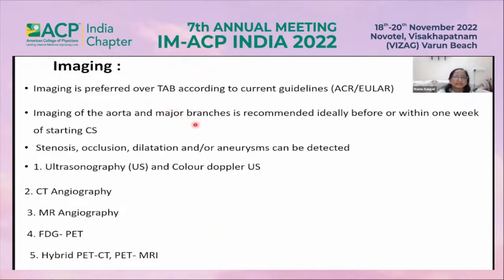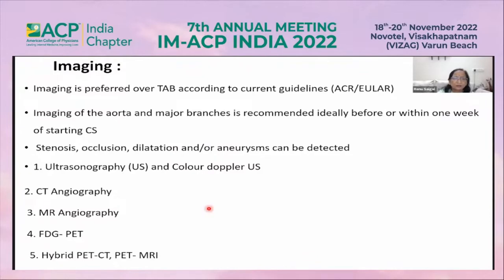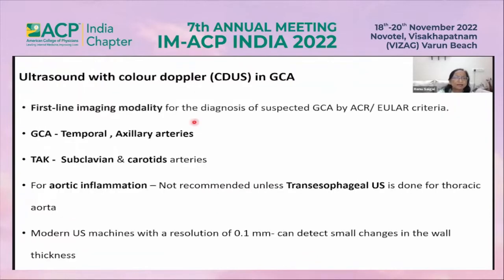Imaging of the aorta and its major branches is recommended, ideally before or within one week of starting steroids. We can find stenosis, occlusion, dilatation, or aneurysm. These are the various imaging modalities I will be discussing one by one.